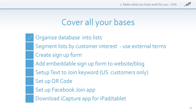Cover all your bases. Organize your database into lists and separate them out, because not everybody has the same interests. Segment them by customer interests. One example is a pet store — you might have one list for dog owners, one list for cat owners. Create a sign-up form, which could be something on paper or something on your website. There are all kinds of tools out there to create forms for your website.